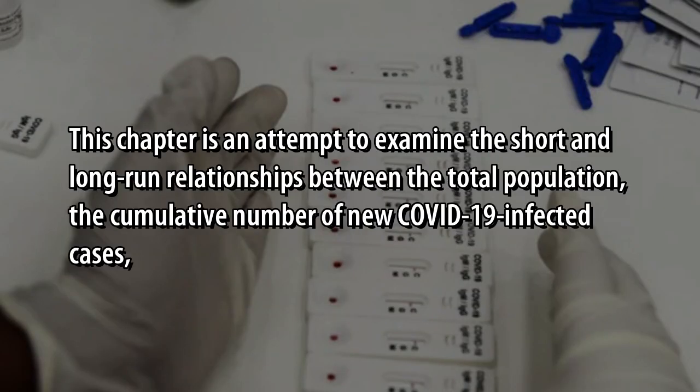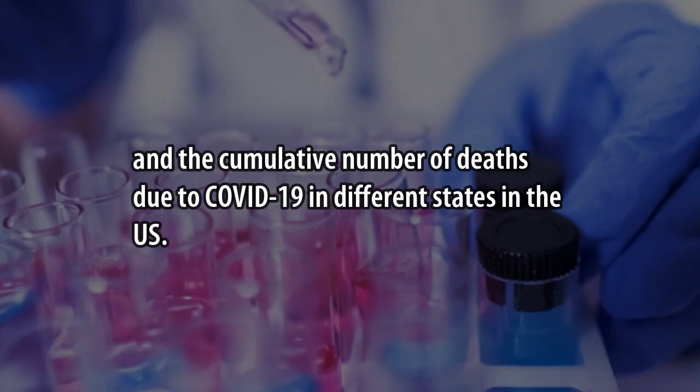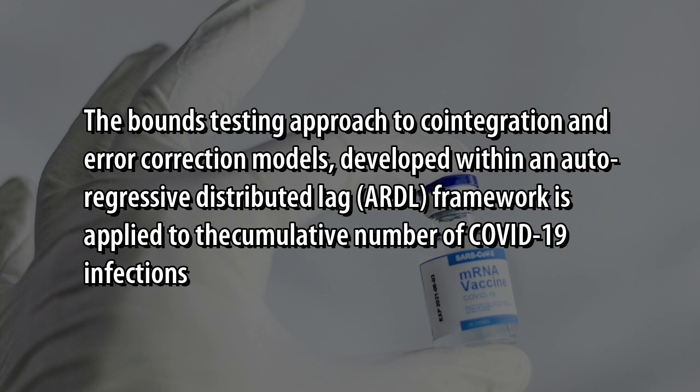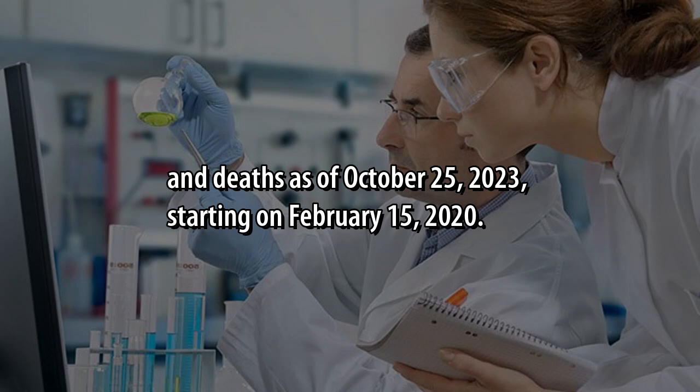This chapter examines the short and long-run relationships between the total population, the cumulative number of new COVID-19 infected cases, and the cumulative number of deaths due to COVID-19 in different states in the US. The Bounds Testing Approach to Co-Integration and Error Correction Models, developed within an Autoregressive Distributed LAG framework, is applied to data from 15 February 2020 to 25 October 2023.